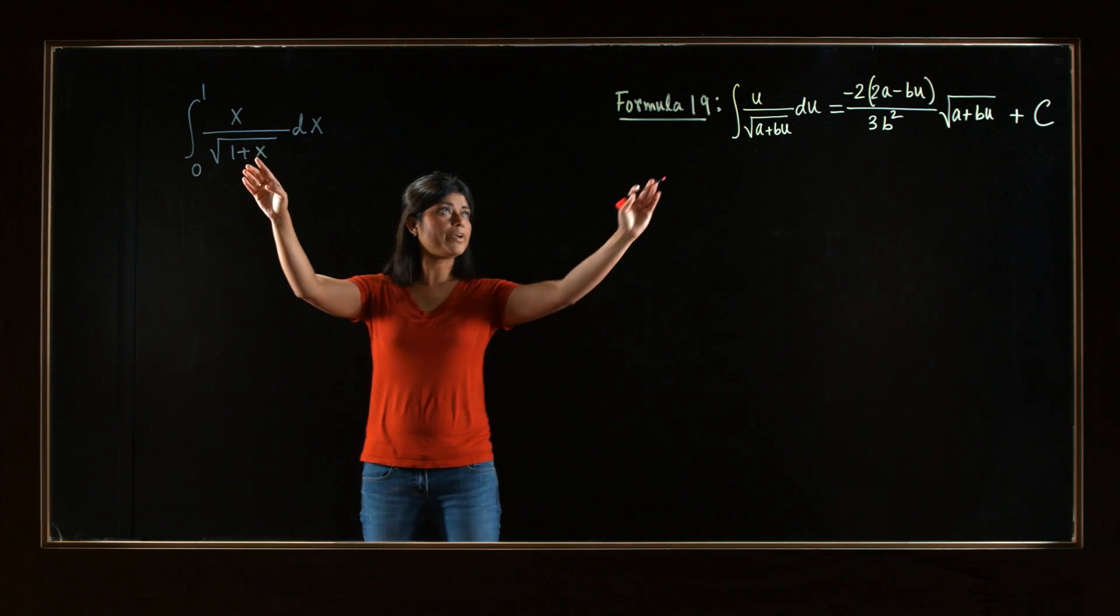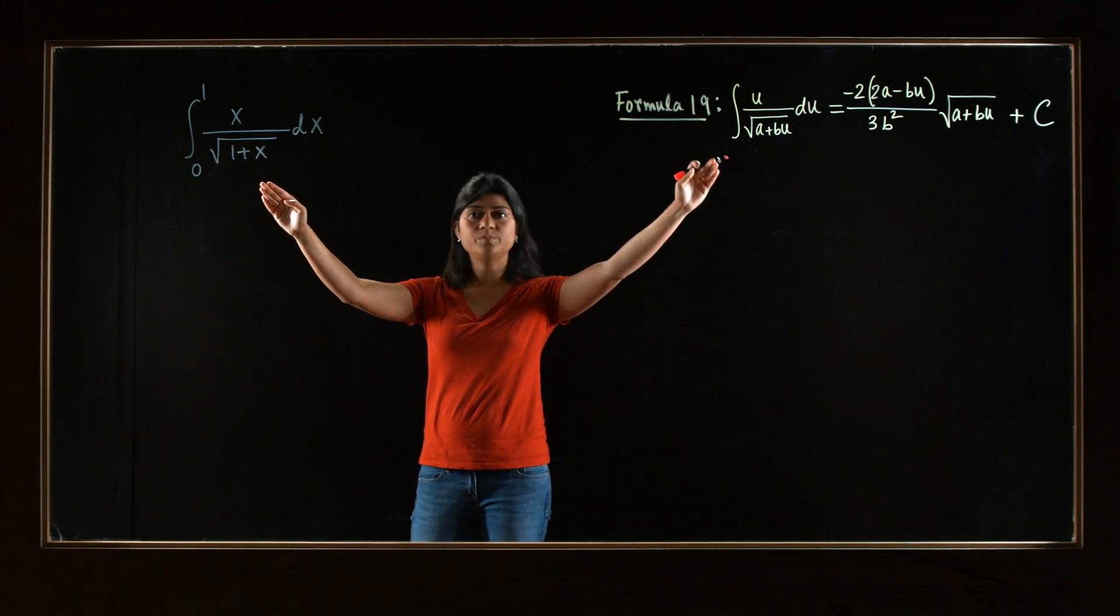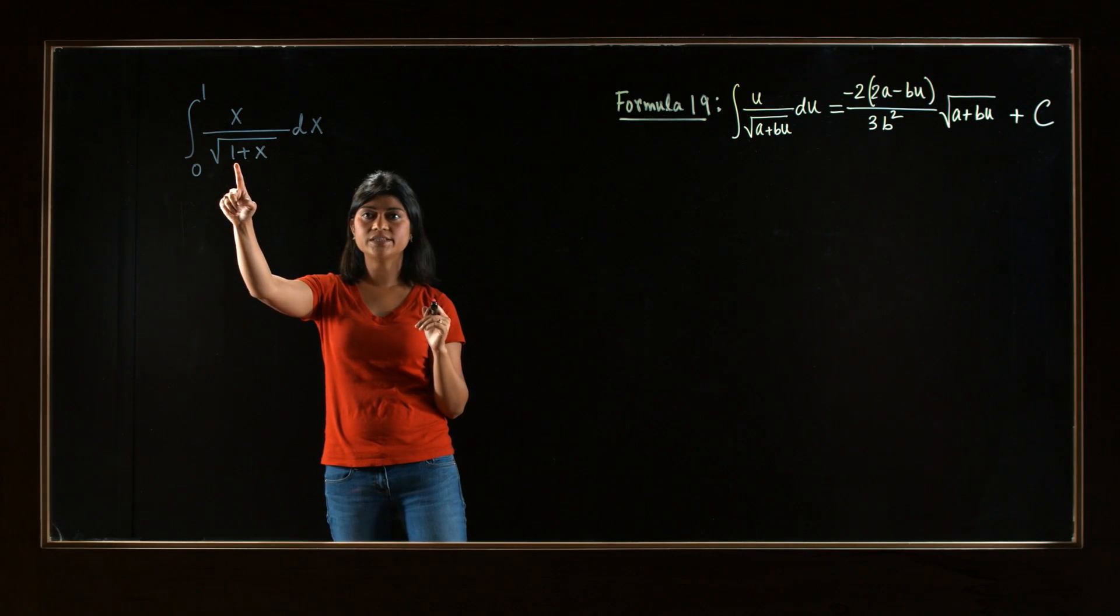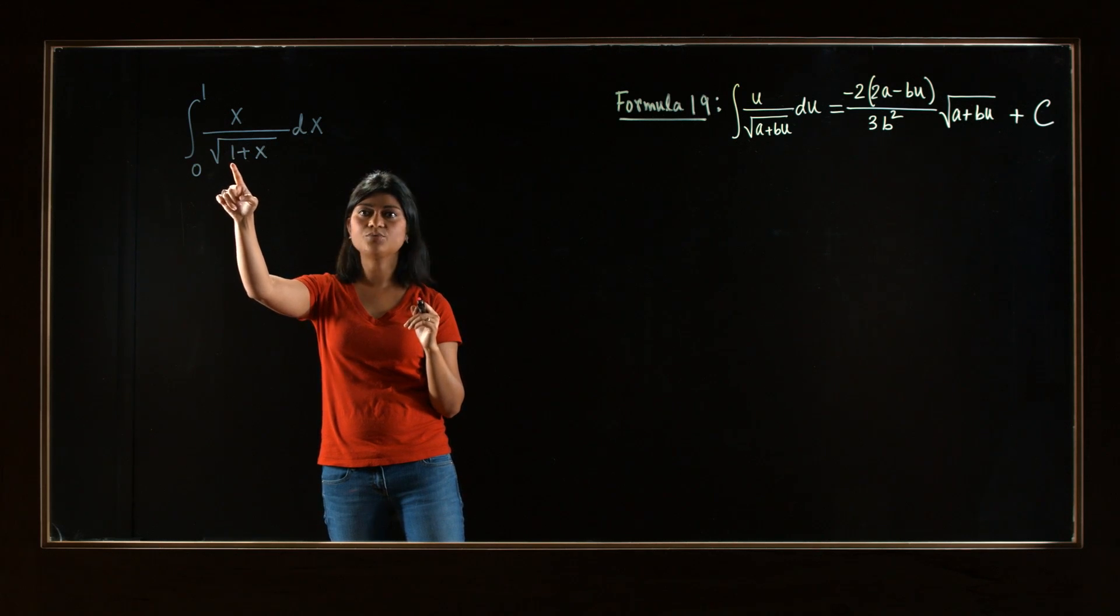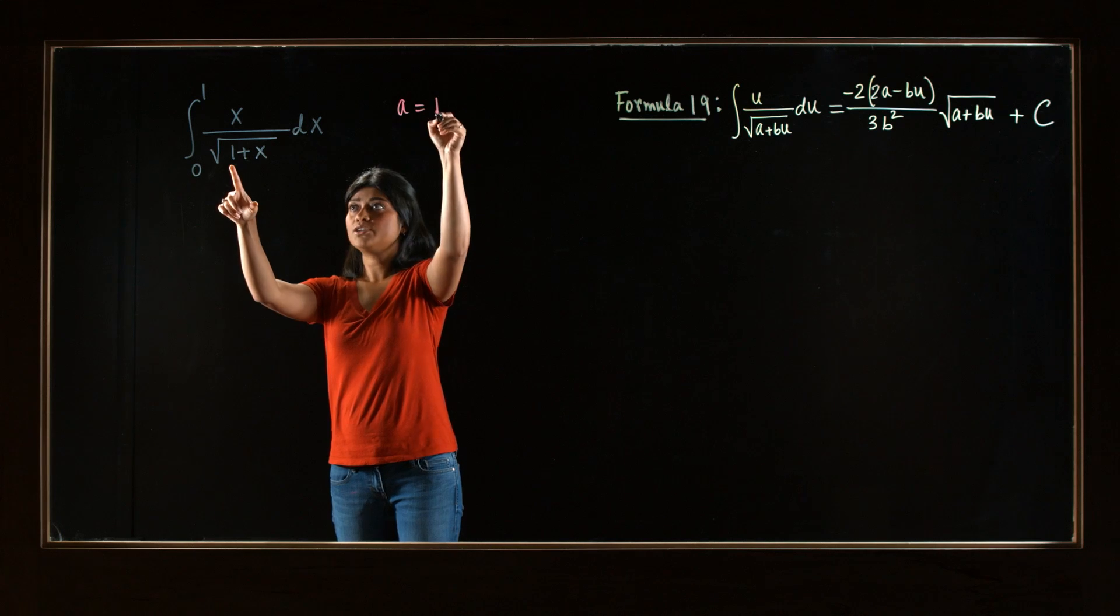All right. So let's compare the two and see what we can say about a, b, and u. So note, a should be the constant that's by itself. And here, we have 1 is such a constant. Therefore, a should be 1.